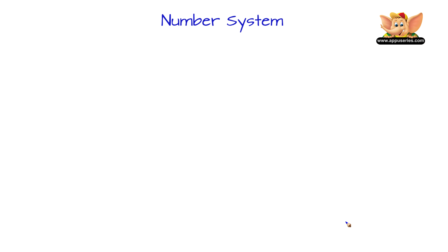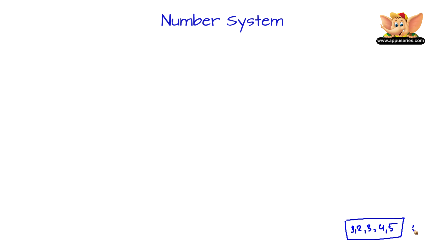We'll start with the numbers with which we are more familiar: 1, 2, 3, 4, 5. These are called natural numbers. Natural numbers are denoted by the letter capital N.